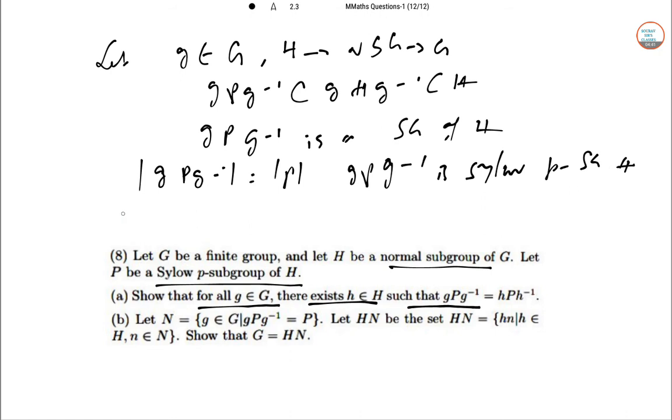By Sylow theorem, P and gPg⁻¹ are conjugate in H, so there exists h∈H such that gPg⁻¹=hPh⁻¹. First part done.